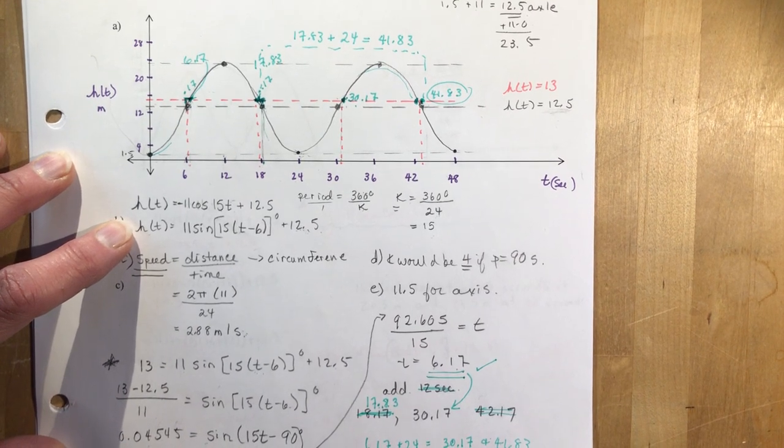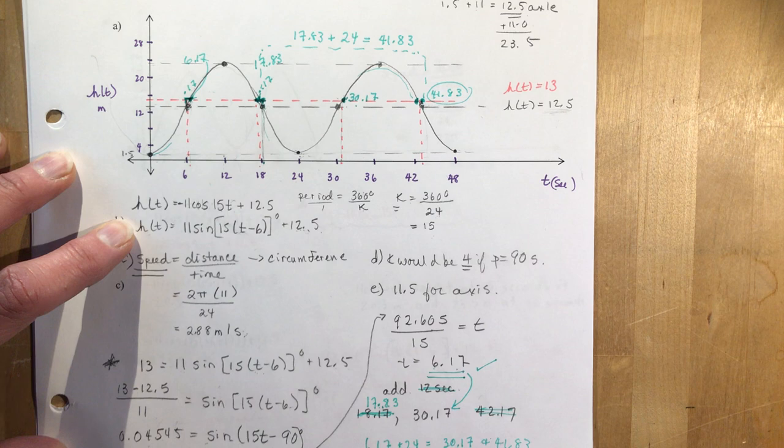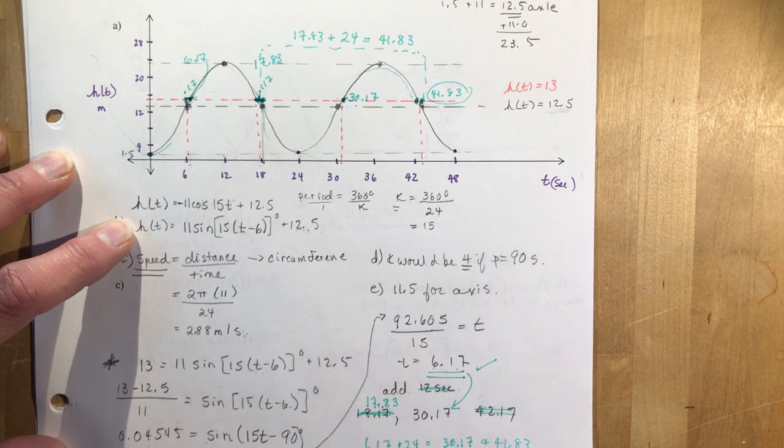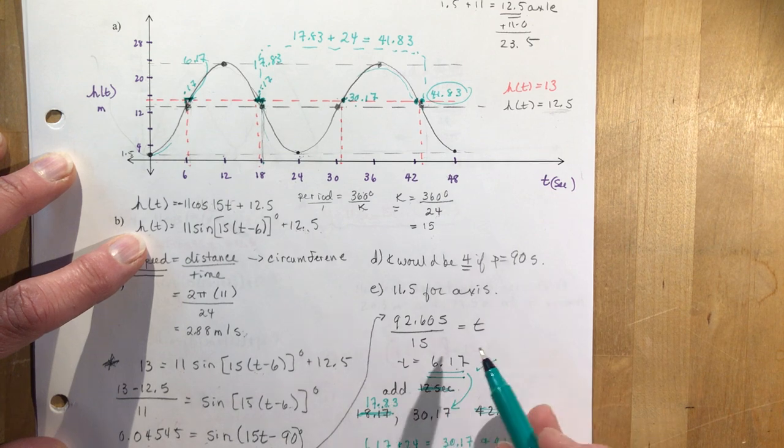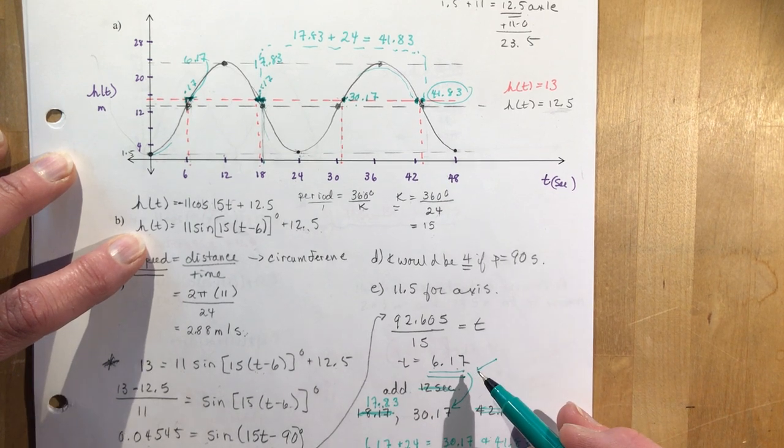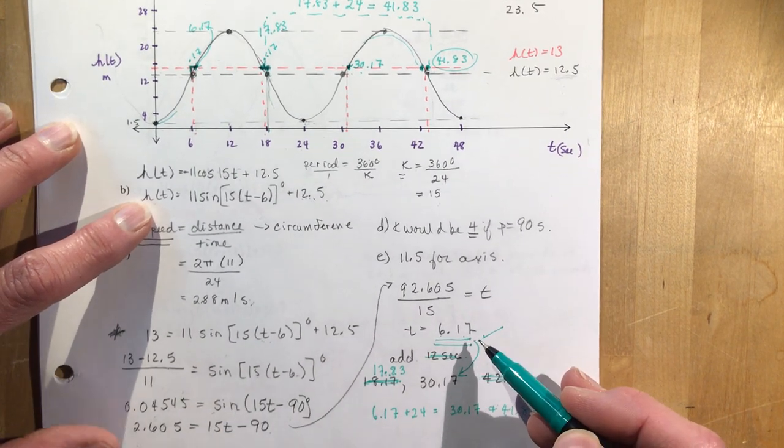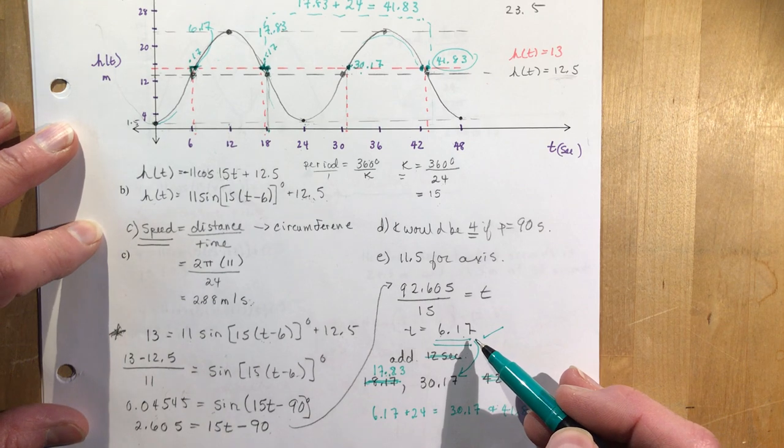In this short video, I want to make a correction to question 9 about the Ferris wheel. Our answer of 6.17 was correct for the time when she would first reach a height of 13 meters.